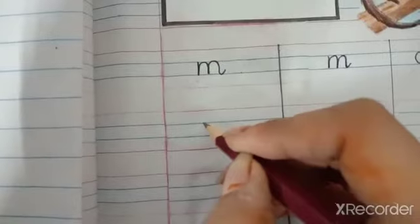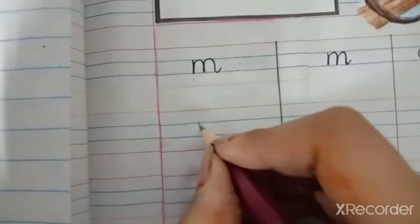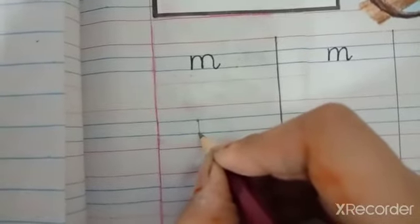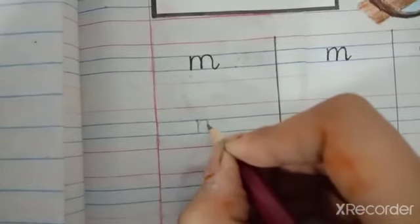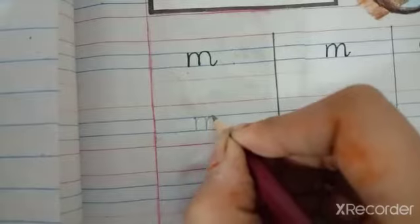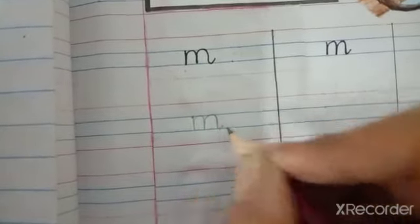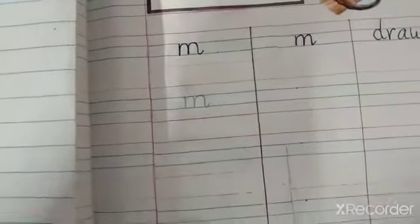Now starting from here. Go down, go up, make a hop, go down, then go up again, make a hop and turn a little. What it becomes? M.